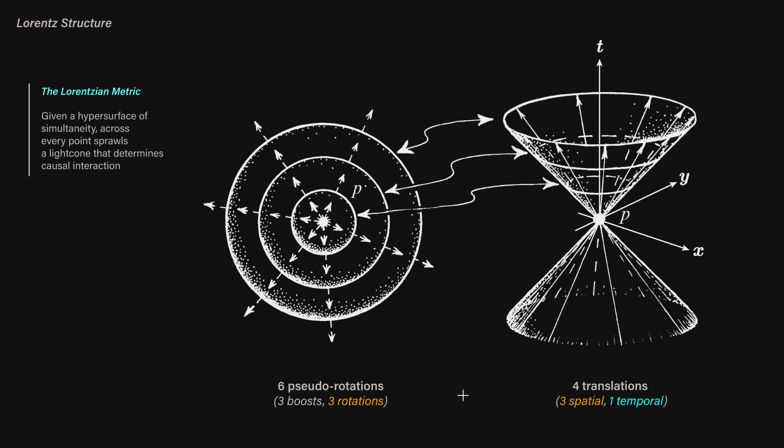That means we have four translations, three spatial rotations, and three Lorentzian pseudo-rotations, which are the Lorentz boosts. All of these respect the Minkowski metric by keeping spacetime intervals constant, and physically that means you won't rotate around an axis and see someone with a different energy and such.